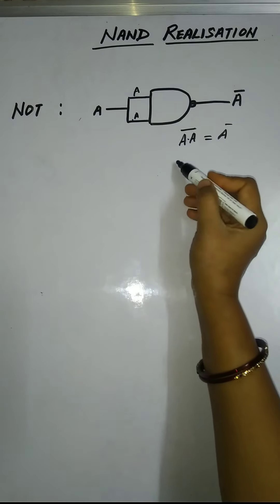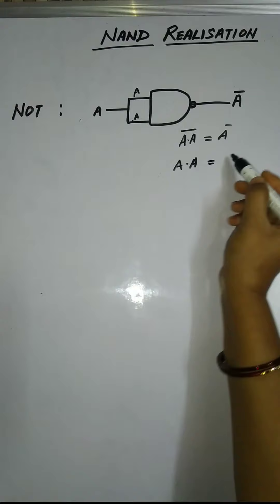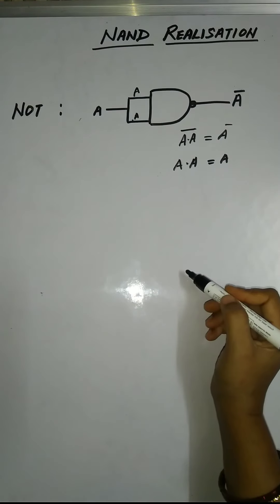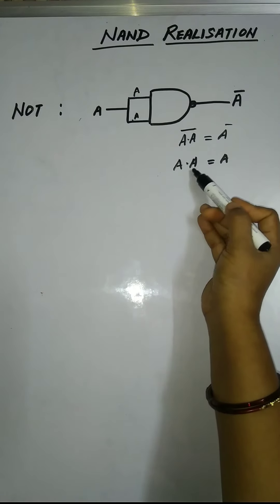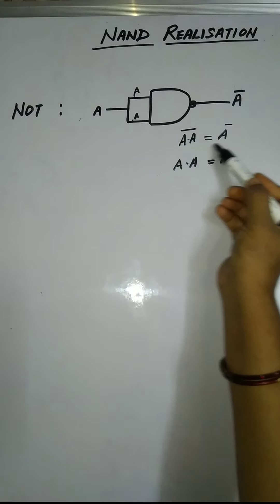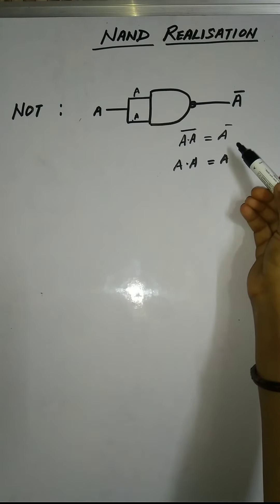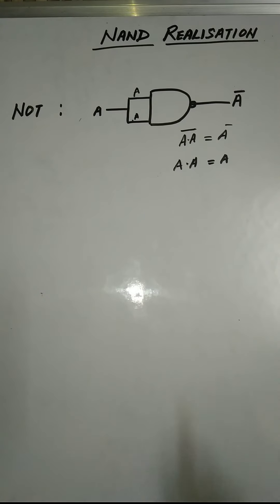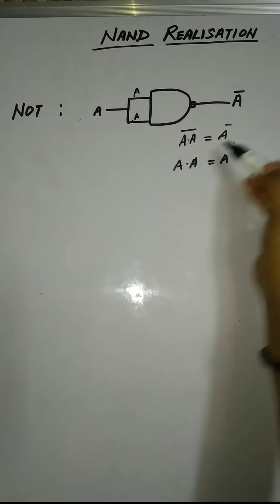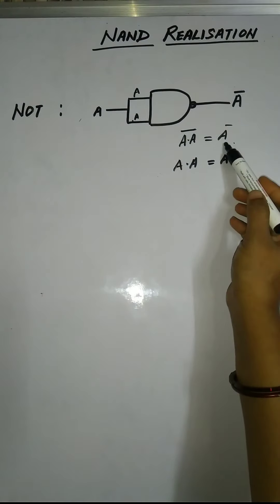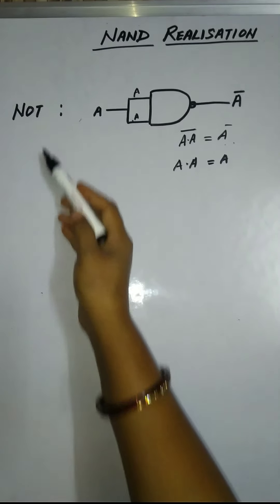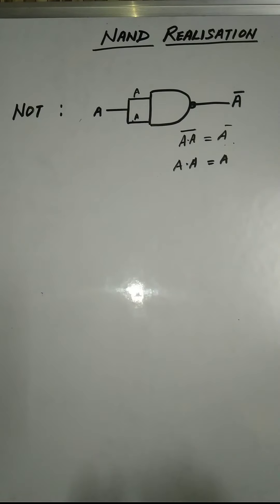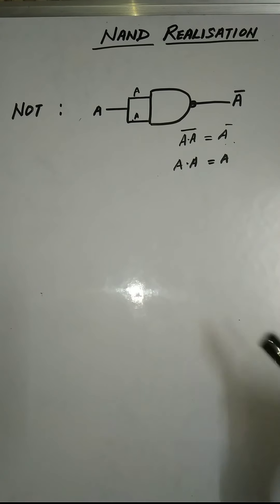As you know, A dot A whole bar is equivalent to A bar. This is because A dot A equals A, so A dot A whole bar equals A bar. That is nothing but the functionality of NOT gate — A bar is the output. So we can implement NOT gate by using NAND gate.